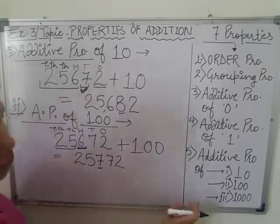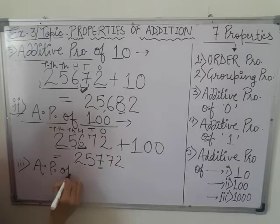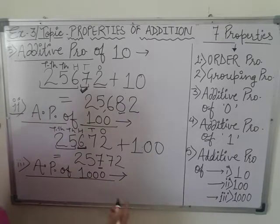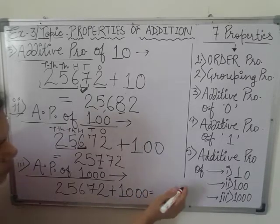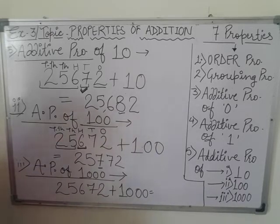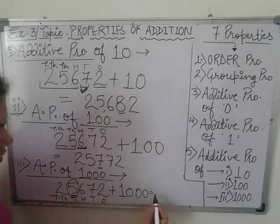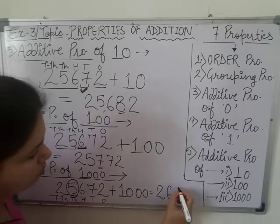Similarly, the additive property of 1000. According to this property, if we are adding 1000 to any large number, like the same number 25,672, and we are adding 1000 to it, then the answer will have the change only in the 1000's place digit. Here it is on 1's, 10's, 100, 1000, 10,000. So the change only in this digit and it will increase by 1. The answer will be 2 as it is, 5 will increase by 1 so it becomes 6, and 672 as it is.